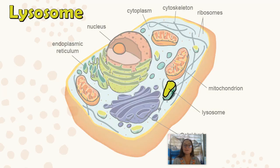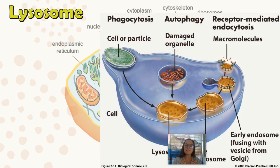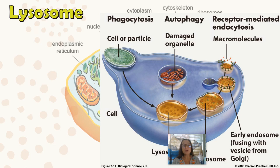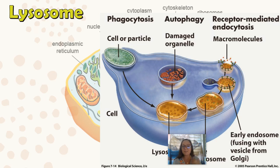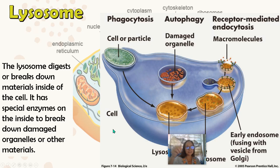The lysosome can be referred to as the garbage truck or recycling center of the cell. A lysosome has special enzymes on the inside that hydrolyze or break down larger molecules — whether that's a damaged organelle like a mitochondria, or something the cell engulfed. For example, white blood cells take in bacteria as part of the immune system, and a lysosome will fuse with that vesicle containing the bacteria and break it down, recycling those parts.